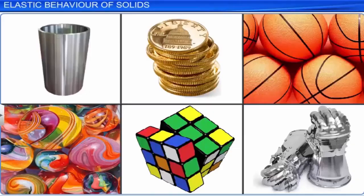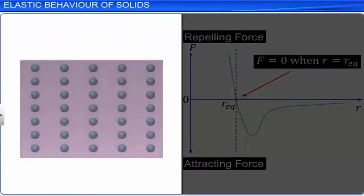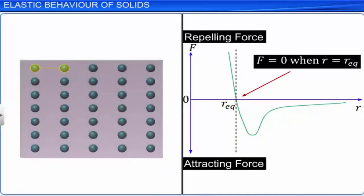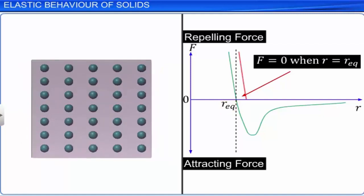Solids exist in different shapes and sizes. The molecules within a solid body occupy fixed positions and their relative distance of separation remains constant. The molecules are in equilibrium with each other and experience no net force. The graph displays the intermolecular force between two molecules as the distance of separation between them changes. When molecules are at the equilibrium distance of separation, there is no net force between them. If they come closer than this, they experience mutually repulsive forces. The force becomes mutually attractive when the distance of separation is more than the equilibrium value.